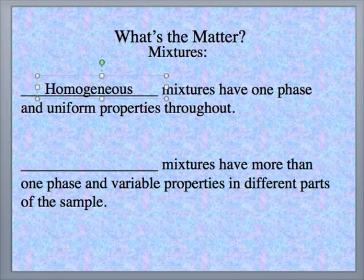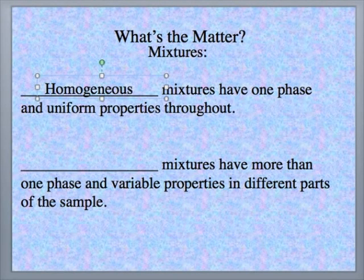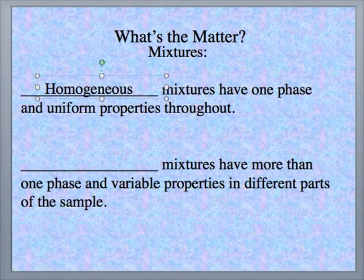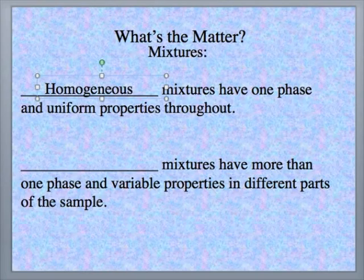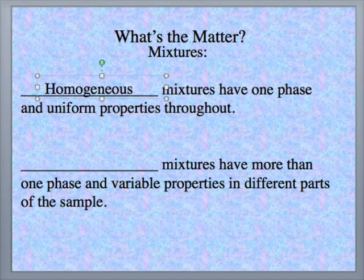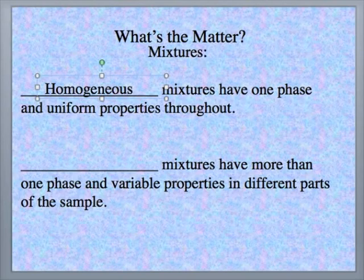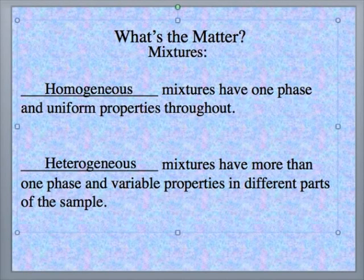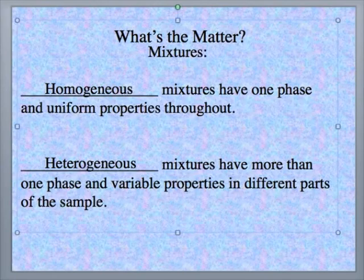And conversely, if the mixtures have more than one phase and variable properties in different parts of the sample, what would you call that? Let's say you put in a cup of salt into water, you stir it around, and now you see you have a liquid part, but not all the salt dissolves and some of it falls to the bottom. So you see more than one phase, you see the liquid, and you see the salt at the bottom of the solid. What kind of mixture would that be? That would be a heterogeneous mixture, when there's more than one phase and variable properties in different parts of the sample.